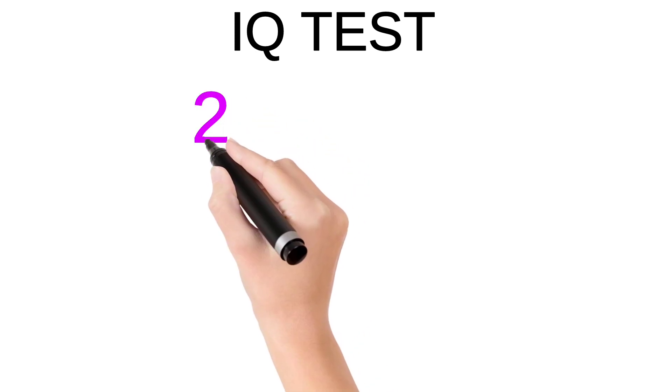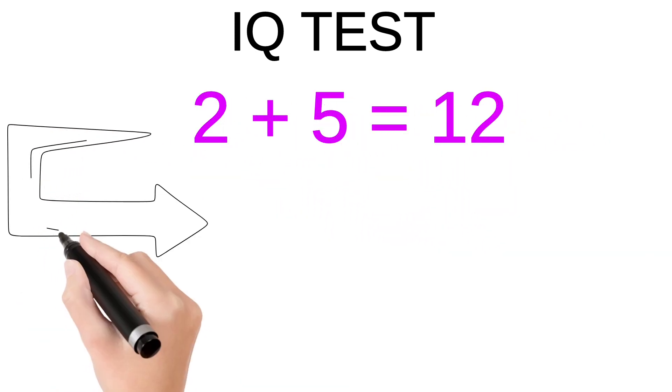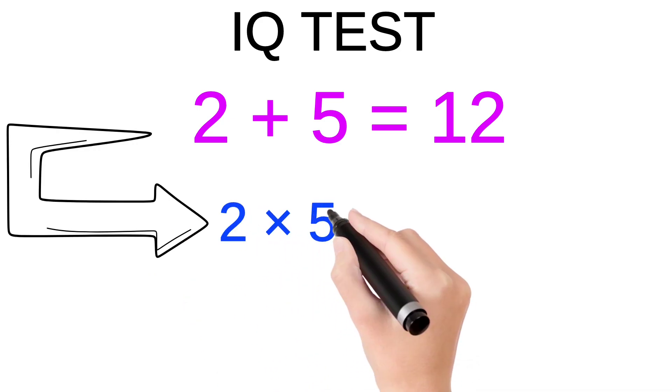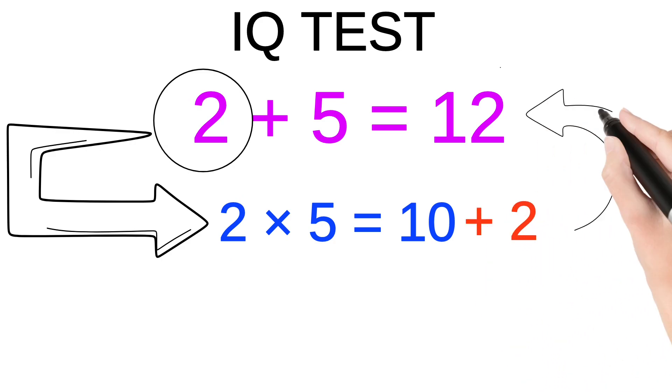We are given that 2 + 5 = 12. If we multiply both numbers, that is 2 × 5, we get 10, and then if we add the first number which is 2, we get 12.